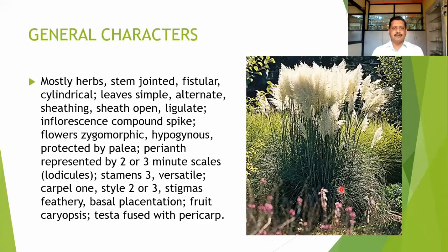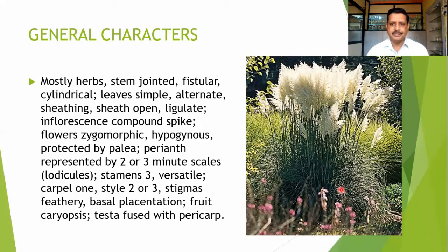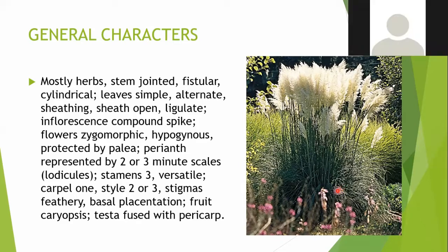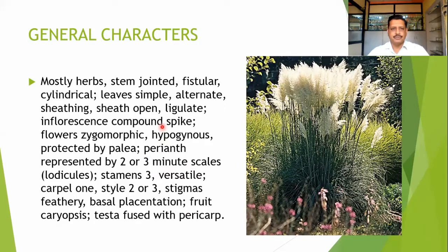In this family, members are mostly herbaceous. Stems are jointed and fistular — hollow inside — and cylindrical. Leaves are normally simple, alternate, and sheathing at the leaf bases. The sheathing base is normally open and may have hairy structures called ligules. Inflorescence is a compound spike, and flowers are zygomorphic and hypogynous in nature.